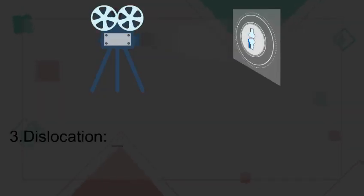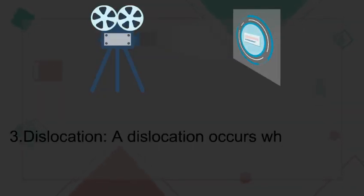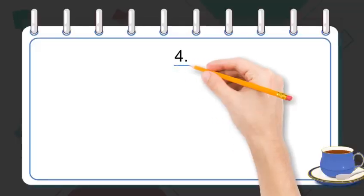3. Dislocation. A dislocation occurs when a bone slips out of a joint.